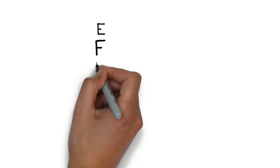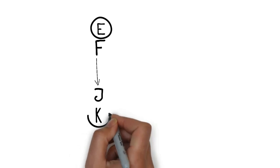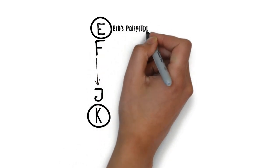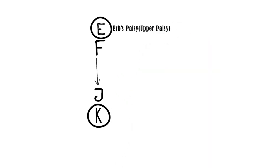To remember them, you can use the alphabetical order. In alphabetical order, E is the upper letter and K is the lower letter. Similarly, Erb's palsy is the upper palsy and Klumpke's palsy is the lower palsy.